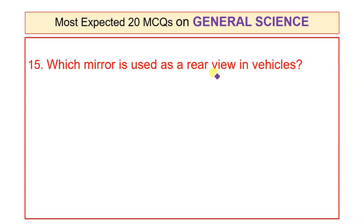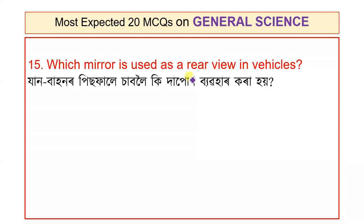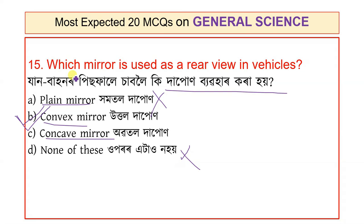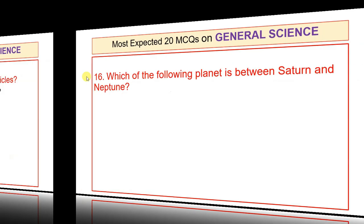Question 15: Which mirror is used as a rear-view mirror in vehicles? Options: Plane mirror (hamatol), Convex mirror (uttol), Concave mirror (abhatol). The answer is Convex mirror. In vehicles, a convex mirror is used as the rear-view mirror because it gives a wider field of view.